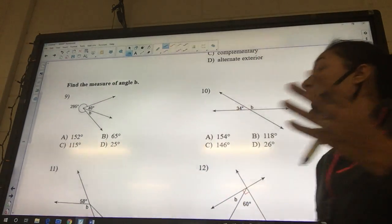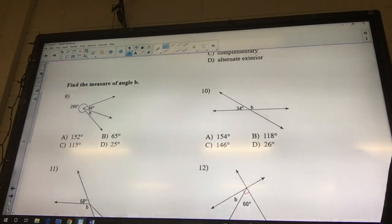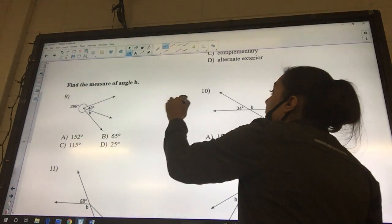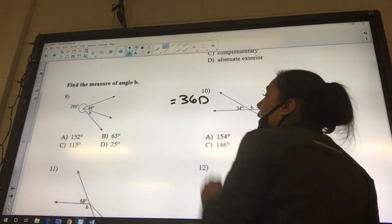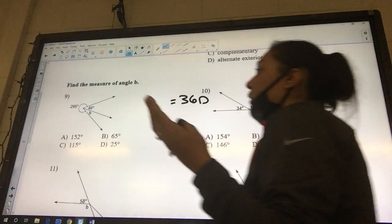Okay, so if we look at number 9, we have one angle that's 40, another angle that's b, and another angle that's 295. How much does a full circle equal? 360. But we don't have a value for b though. That's right.